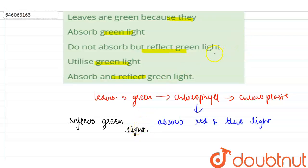So the correct option is: do not absorb but reflect green light. Leaves do not absorb green light, do not utilize green light, and do not absorb and reflect it. They only reflect green light. The correct option is: do not absorb but reflect the green light. Thank you.